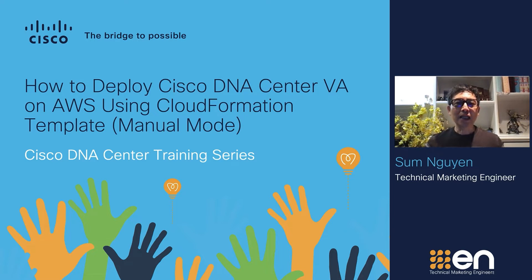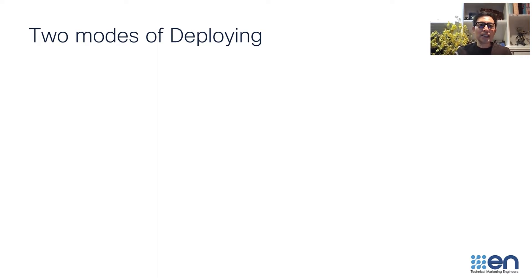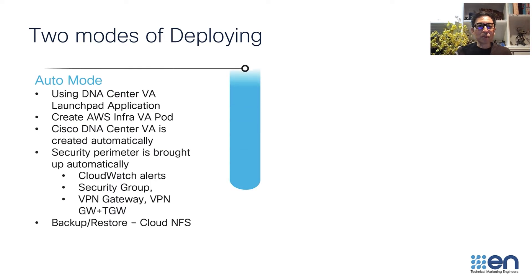In deploying your DNA Center VA, to make it easy for you, our customer, to deploy Cisco DNA Center VA, we offer you two modes. The first one is the Auto Mode, which we call Easy Button, and the second is the Manual Mode.